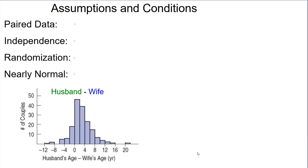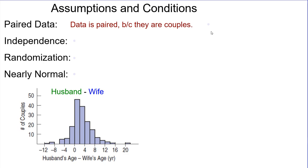So assumptions and conditions: first, we are doing paired data. It's always preferable to design an experiment where we can pair data or block data together. When we subtract the differences between the two in paired data, it removes all the extra variation we would have from just two random samples of married men and married women. It's always beneficial to pair the data — this gives us much more conclusive results with a smaller sample size because we can remove a lot of variation. The data is paired because they are couples; each husband is related to their wife because they're married, which is exactly what we were asking.